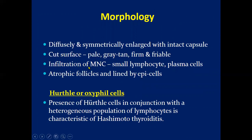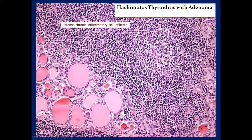There is infiltration of mononuclear cells, small lymphocytes, and plasma cells. There are atrophic follicles lined by epithelial cells. Microscopic examination reveals extensive infiltration of the parenchyma by mononuclear inflammatory cells. The presence of Hürthle or oxyphil cells in conjunction with a heterogeneous population of lymphocytes is characteristic of thyroiditis.